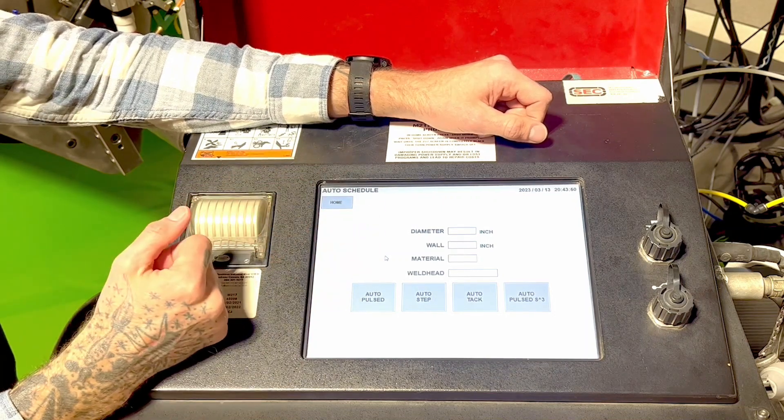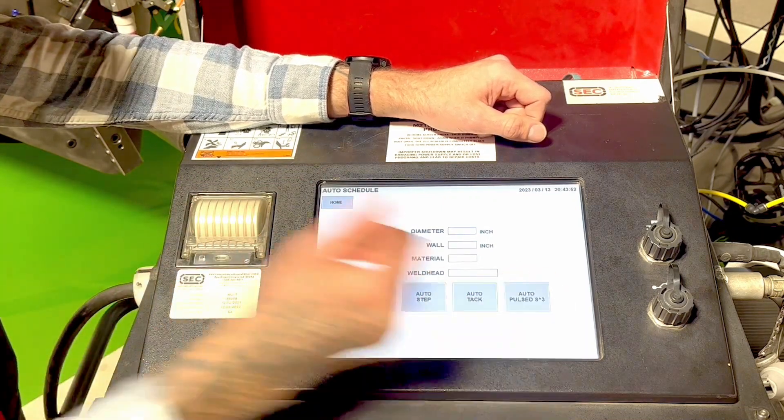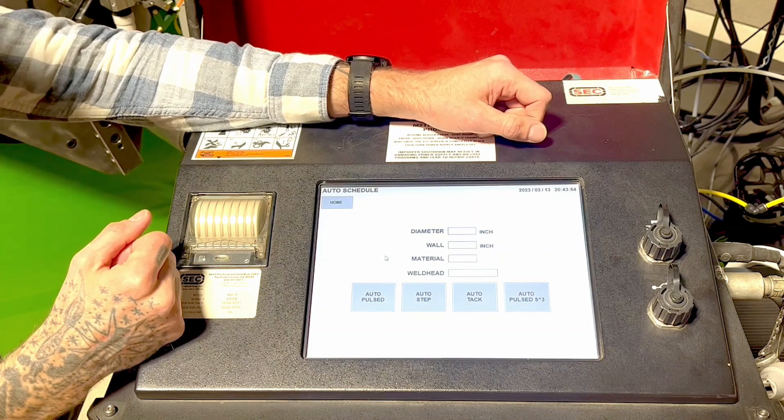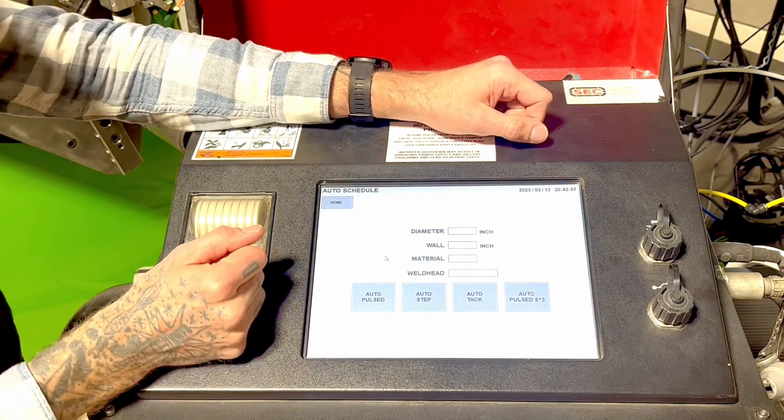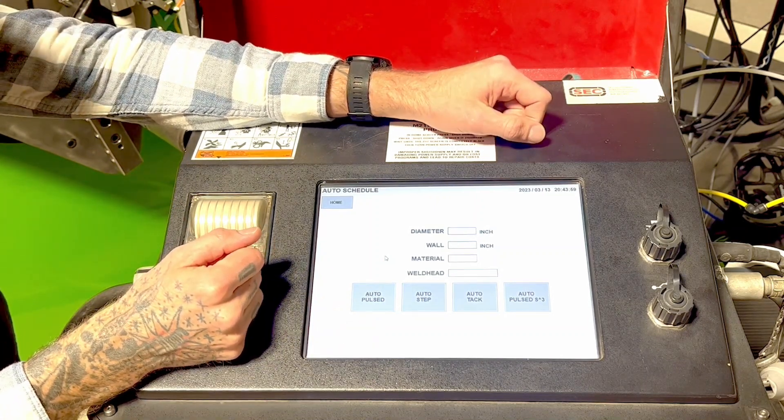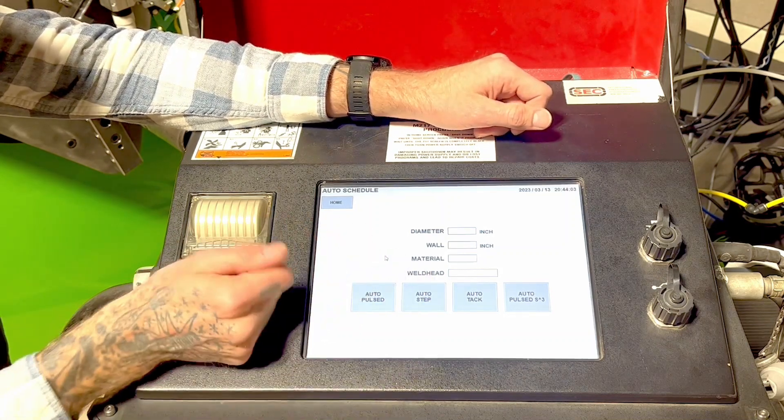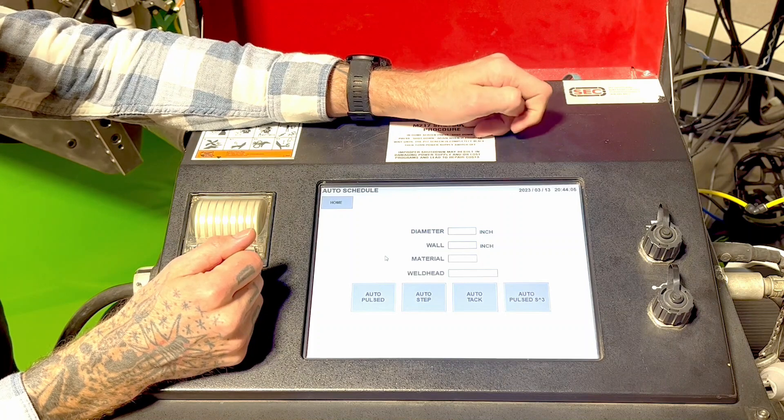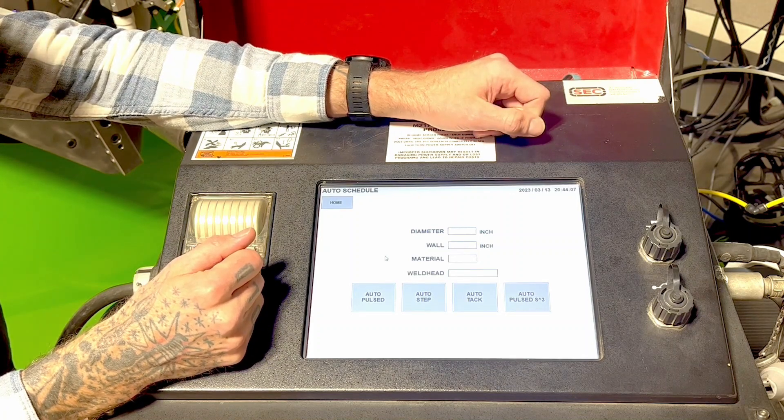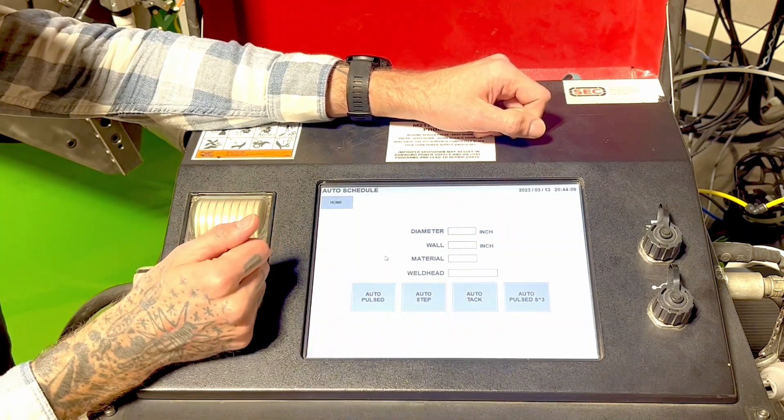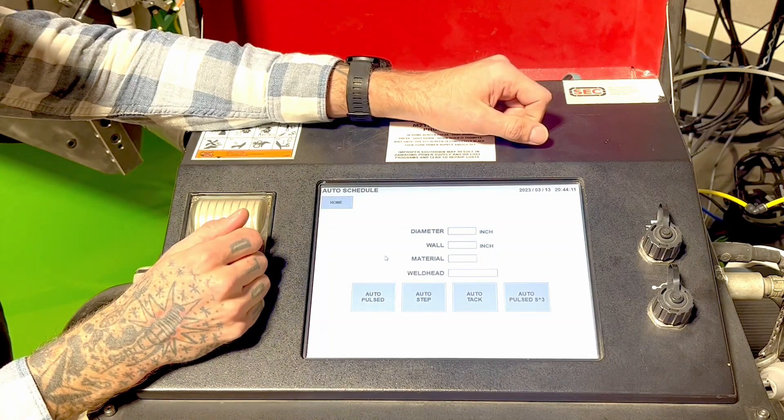After we input these parameters we're going to be prompted to pick one of four different programs. First you have the auto pulse. This is continuous rotation weld program and it's your standard multi-level orbital welding setup. Then you have auto step which can be visualized like second hand on a clock. We have auto tack which is fairly self-explanatory.